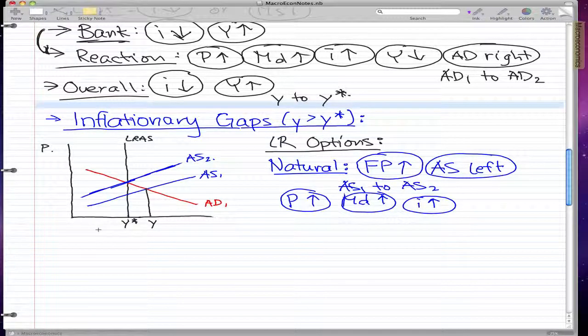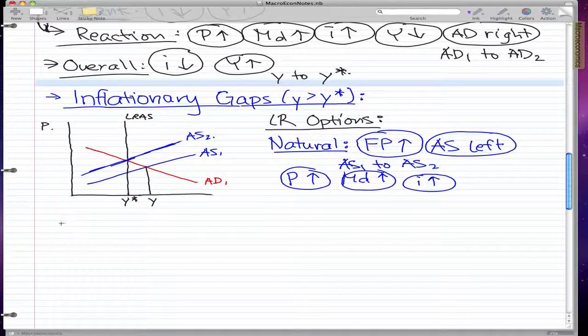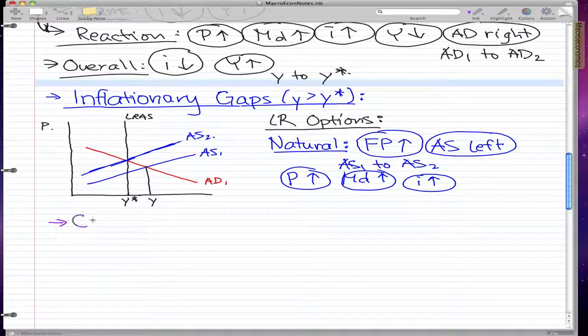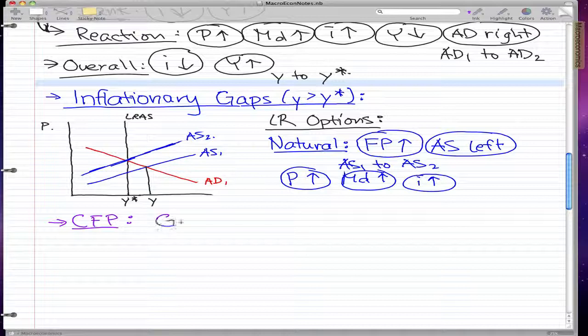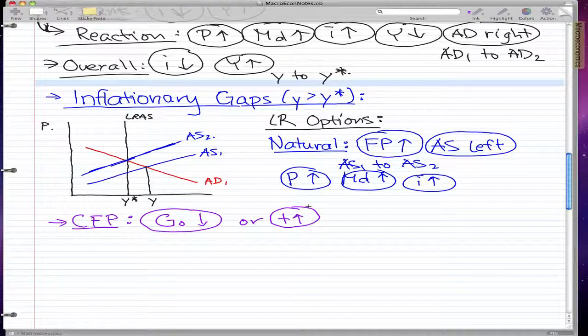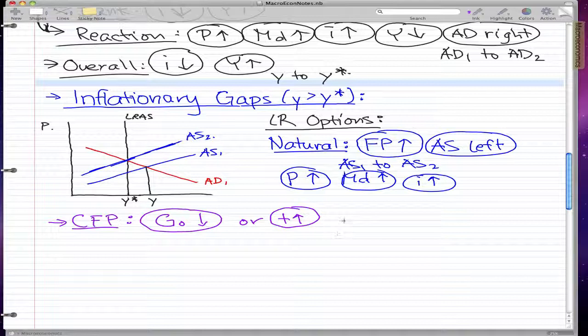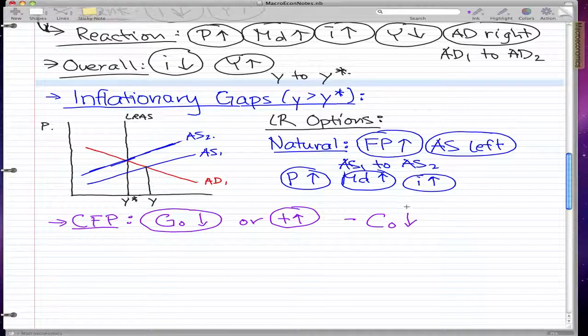So the next one is of course contractionary fiscal policy. Of course we remember that this is when government spending decreases or tax increases. What this does, remember when tax increases we won't spend anymore, so this is optional but we can know from analyzing that tax increase causes a decrease in consumption.